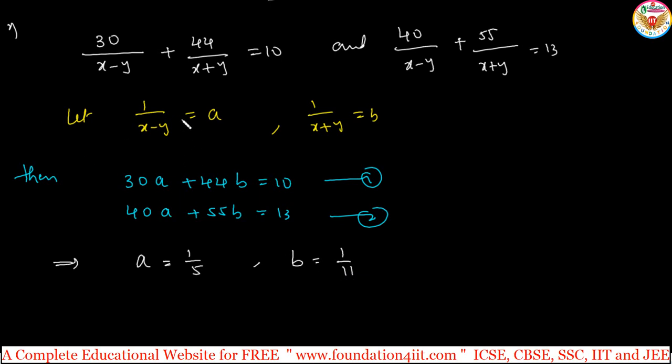After getting, then A is actually 1 by x minus y, that is 1 by x minus y equals 1 by 5, then x minus y equals 5. B value is 1 by x plus y equals 1 by 11, then x plus y equals 11. These two we got.